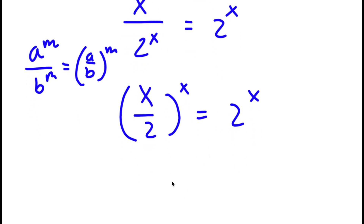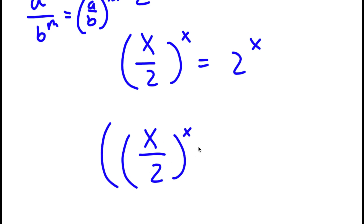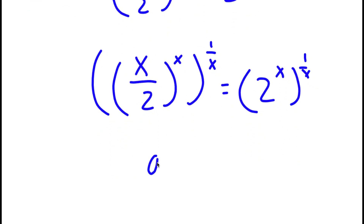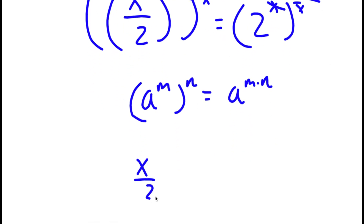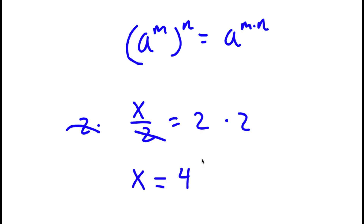Now I'm going to take both sides to the power of 1 over x. So (x over 2) to the power of x to the power of 1 over x equals 2 to the power of x to the power of 1 over x. Since a to the power of m to the power of n equals a to the power of m times n, x times 1 over x cancels out on both sides, leaving simply x over 2 is equal to 2. Multiplying both sides by 2 gives x is equal to 4.